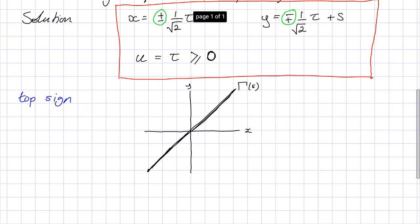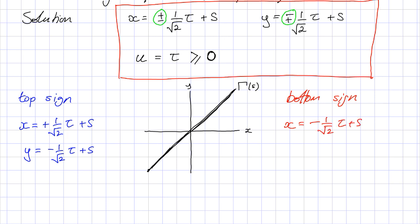With the top sign, that's x equals plus 1 over root 2 tau plus s, and y equals minus 1 over root 2 tau plus s. That's solution 1 with the top sign. We can also look at the solution with the bottom sign. This is x equals minus 1 over root 2 tau plus s, and y equals plus 1 over root 2 tau plus s. u is the same in both cases, so I'm not going to worry about that here.